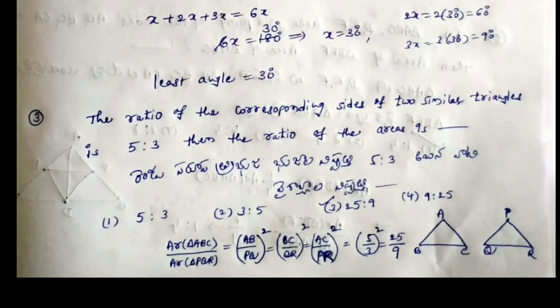We have the formula for the area. For similar triangles, the ratio of areas equals the square of the ratio of sides. So the area ratio is 5 by 3 whole square, which equals 25 by 9. The answer is 25 to 9.